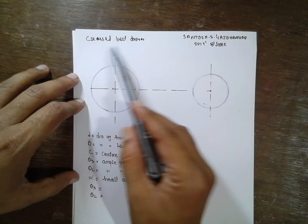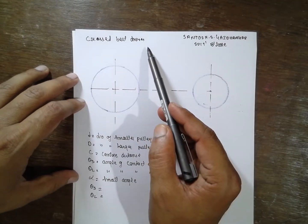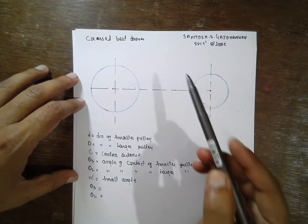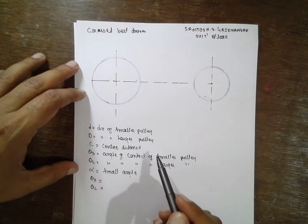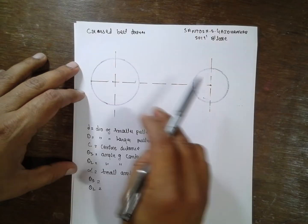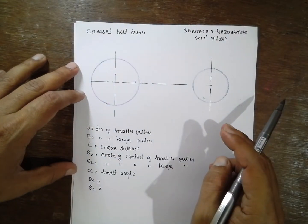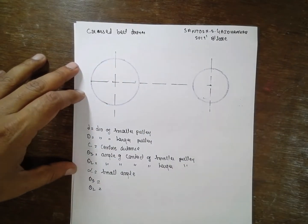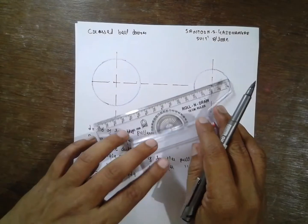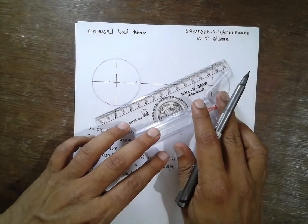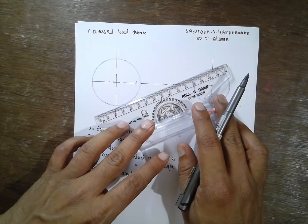This is about cross belt drive, a derivation — a DME2 concept on belt drives. These are the driver pulley and driven pulley. This is a cross belt drive; these are the belts which move over the pulleys.